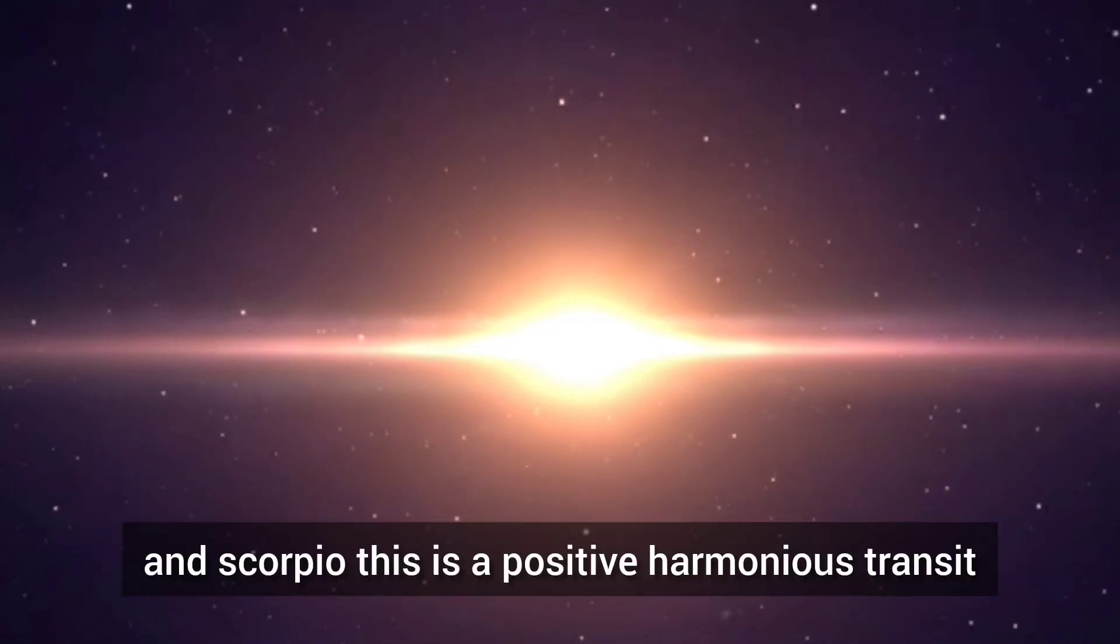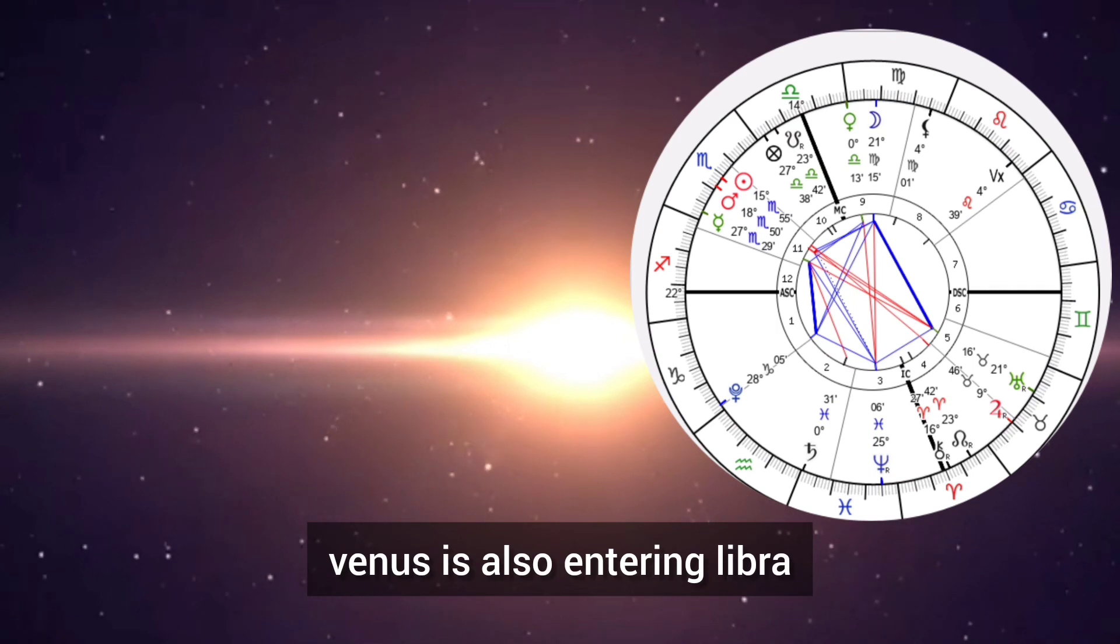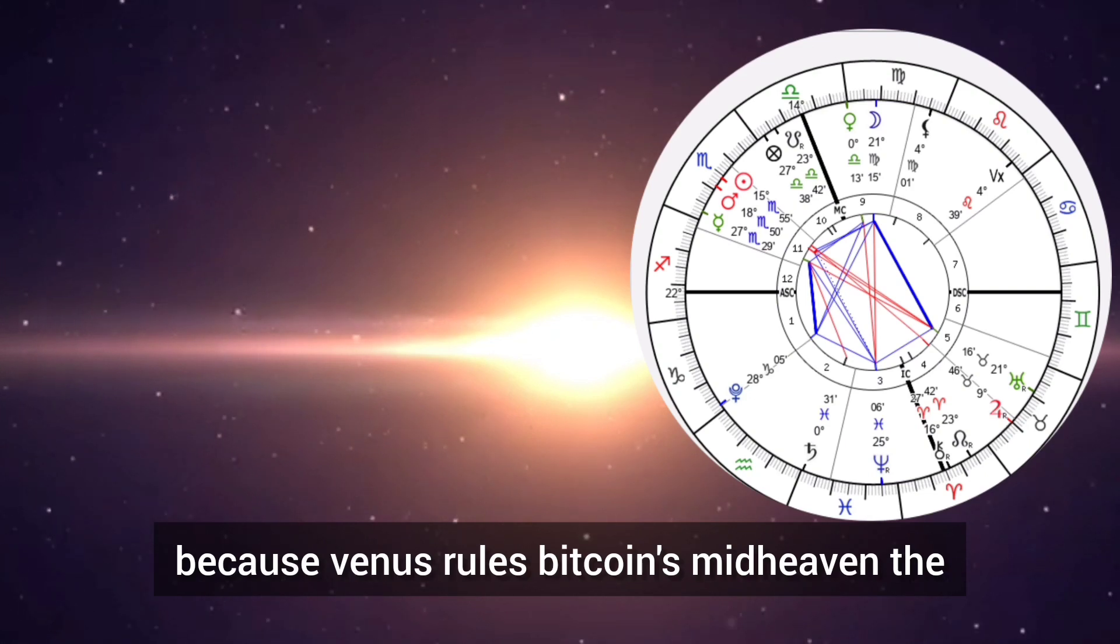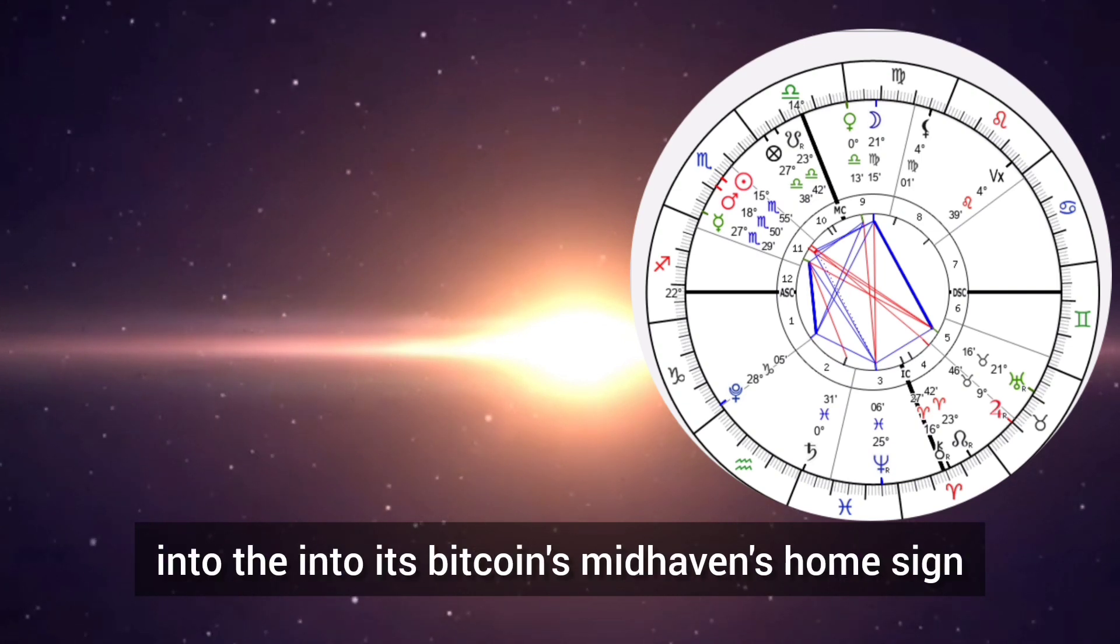The moon is exiling Mars in Scorpio. This is a positive harmonious transit. Venus is also entering Libra. This is fantastic because Venus rules Bitcoin's midheaven, the highest point in the chart, so Venus is moving into Bitcoin's midheaven's home sign.